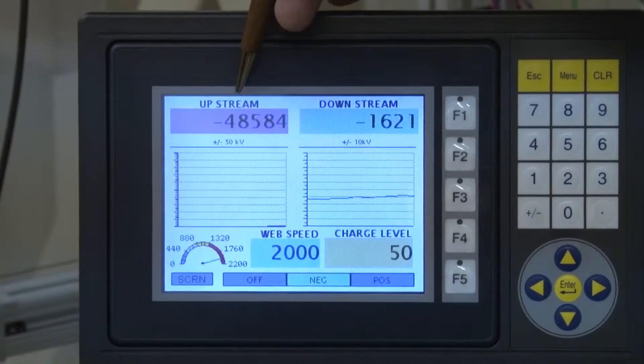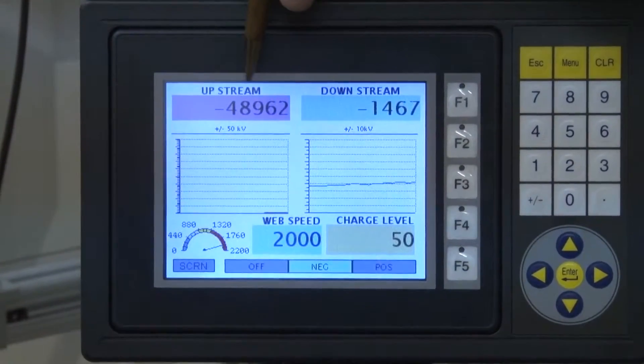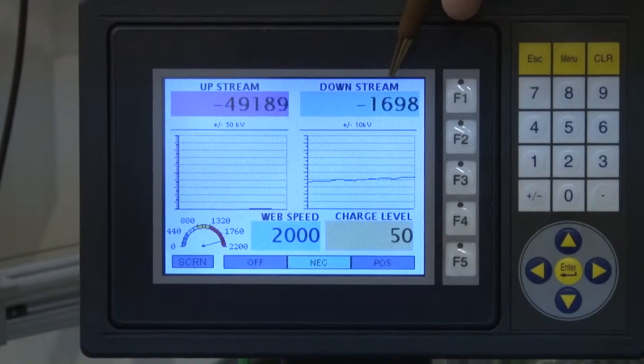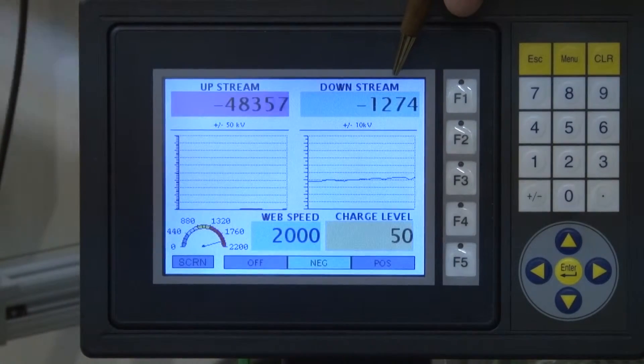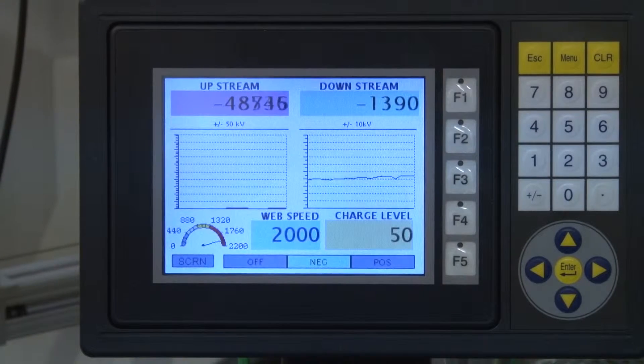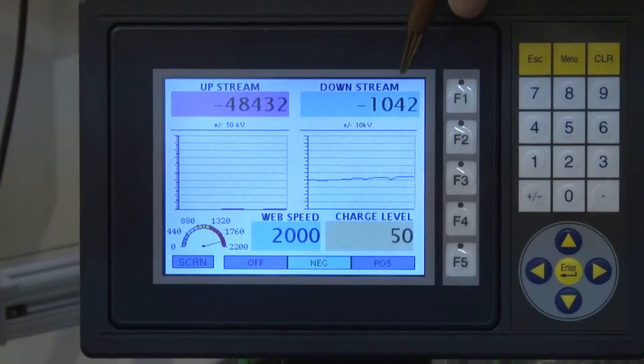We see now we have negative 50,000 volts on our upstream sensor, and this number here has been reduced to less than half of what it was before. Before we had about 2,500 volts. Now we're down to about 1,000 volts.